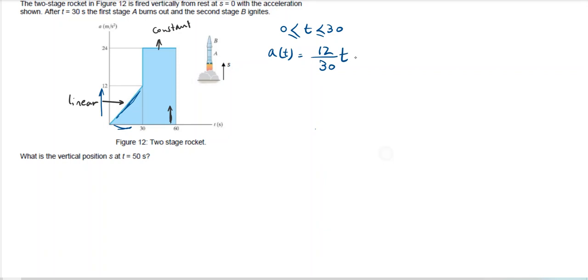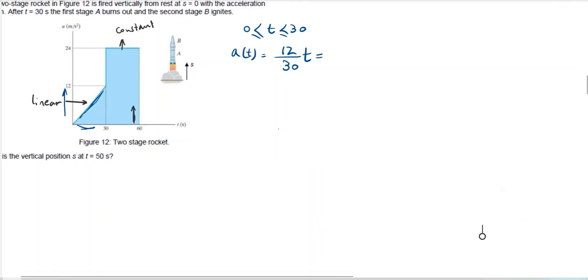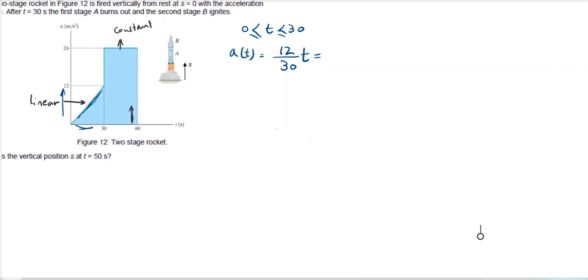Let's keep it at this one but don't forget the unit here is meter per second squared. From t equal to between 30 seconds to 60 seconds, the acceleration is constant, 24 meter per second squared.